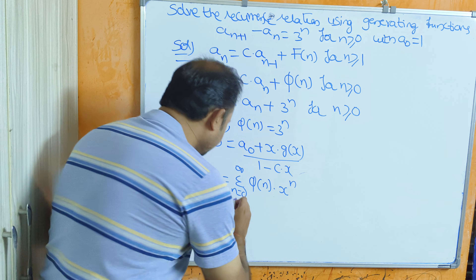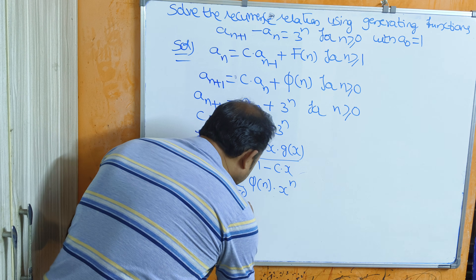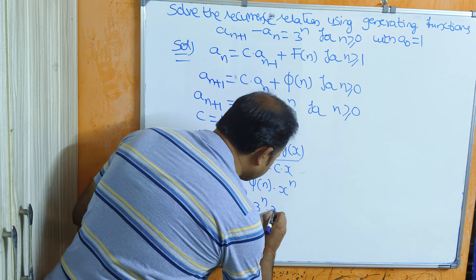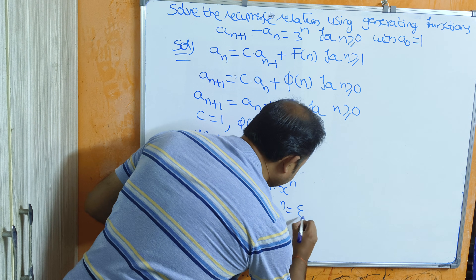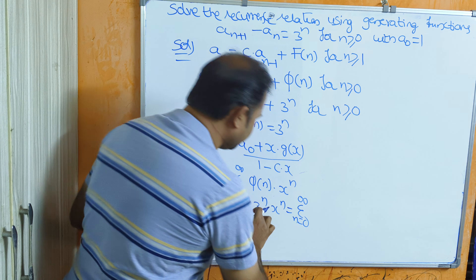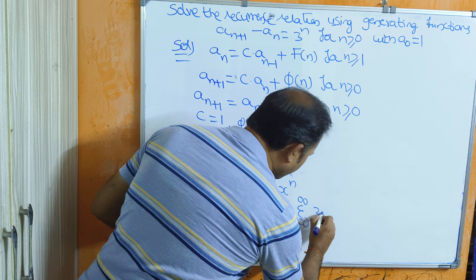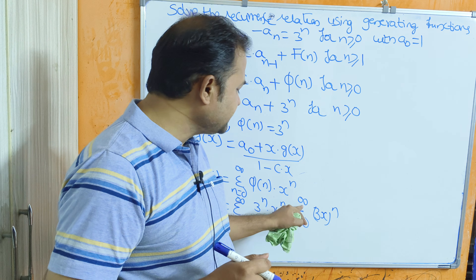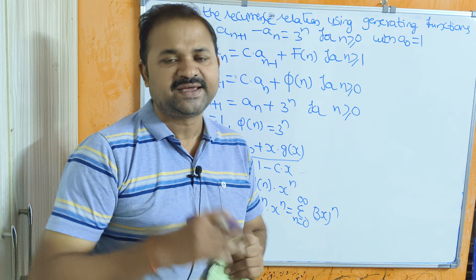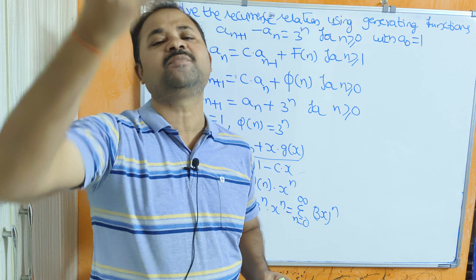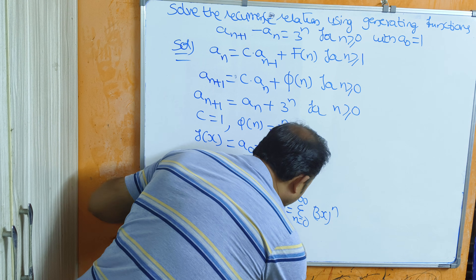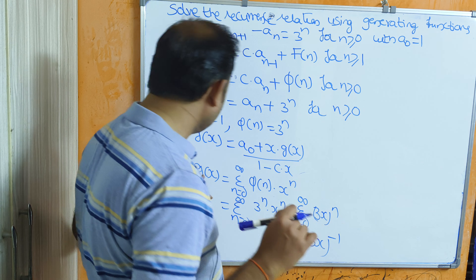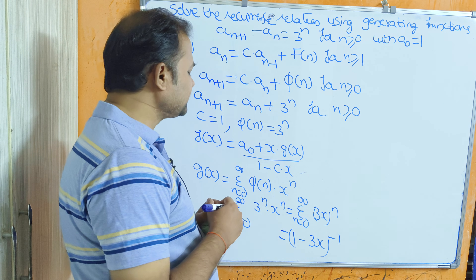First we compute g(x) and then f(x), since f(x) requires g(x). Substituting f(n) equal to 3^n, we get g(x) equal to sigma n=0 to infinity of 3^n times x^n, which equals sigma n=0 to infinity of (3x)^n. Using the formula sigma x^n equals (1-x)^(-1), we get g(x) equal to (1-3x)^(-1).